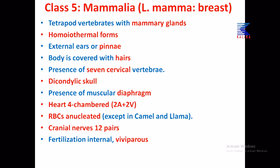We have got the last class: class Mammalia. Mammals are tetrapod vertebrates with mammary glands — milk-producing glands. From the term 'mammary glands' the class name Mammalia came. 'Mamma' means the breast, or in animals the udder, that produces milk.